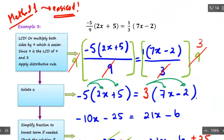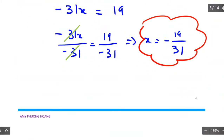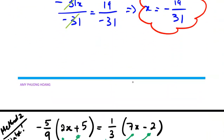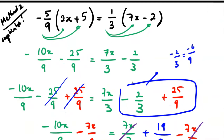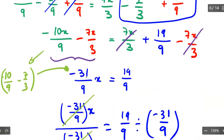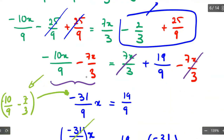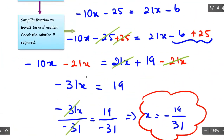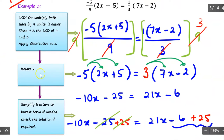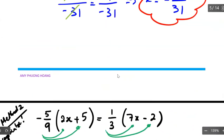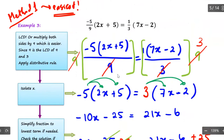Method number one gave x equal to negative 19 over 31, and method number two gives the same result. Method number one is a lot simpler because you get rid of the denominator right away and can go straight into simple linear algebra steps. Method number one is strongly recommended. Method number two involves fractions throughout but uses the same concept for solving linear equations.